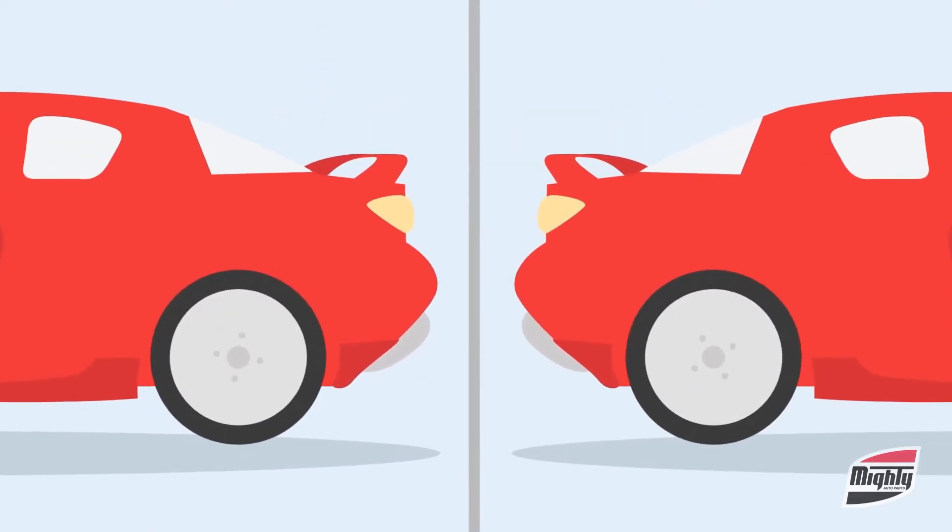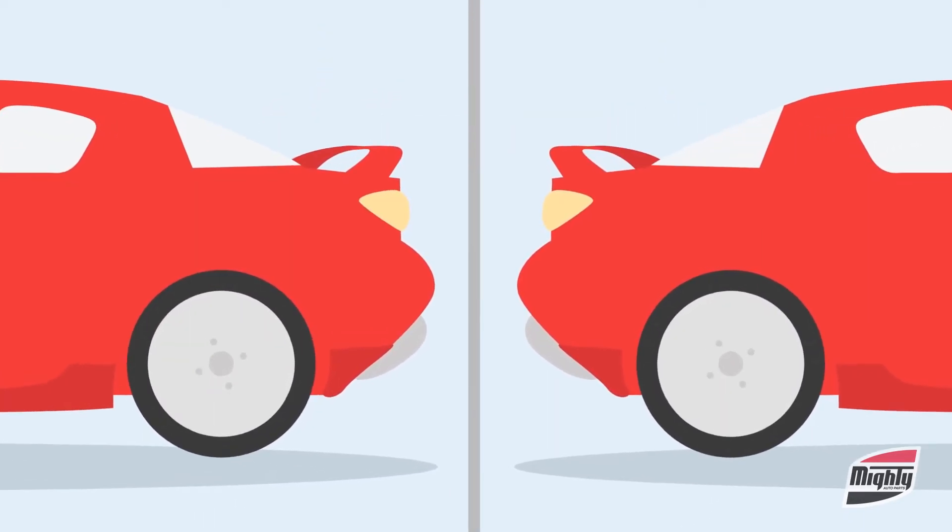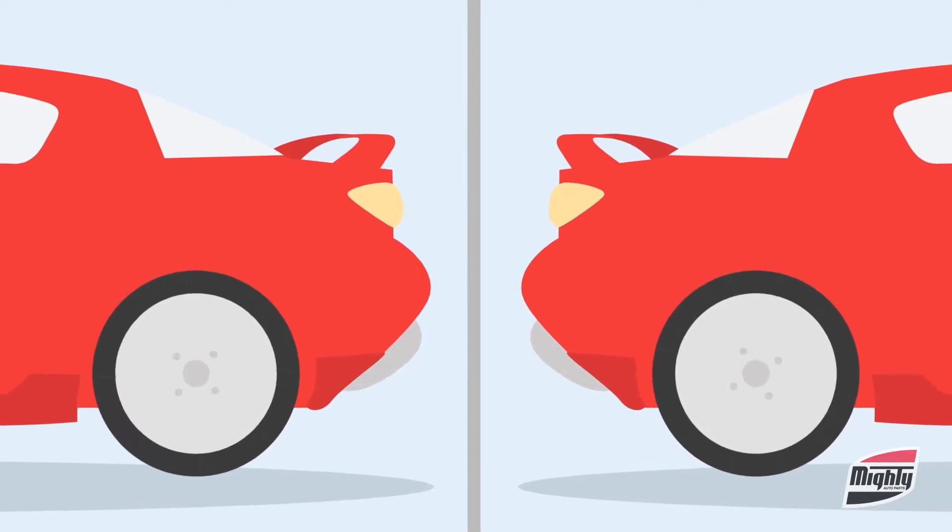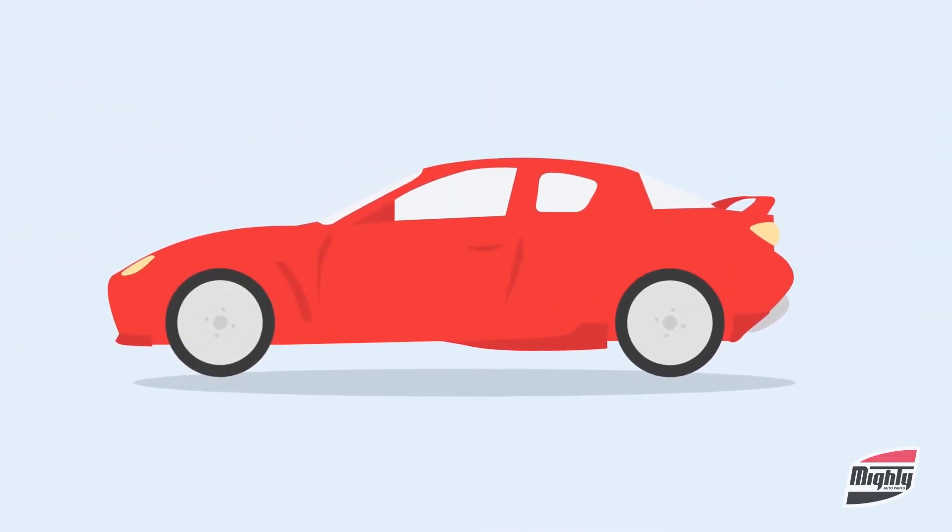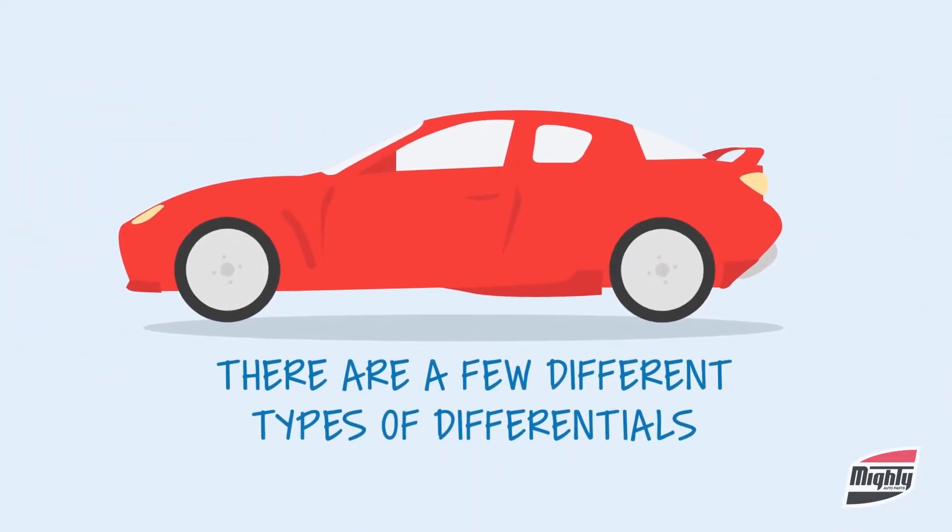It's called a differential because it transmits power to the wheels in a way that allows them to rotate at different speeds. And while they all do the same thing, there are a few different types.